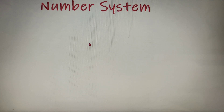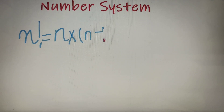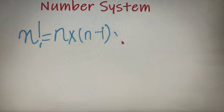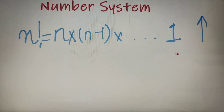Before moving ahead, let's do a quick recap of what a factorial is. Factorial of a number is nothing but all the numbers from n down to 1. So n factorial equals n times (n minus 1) times all numbers down to 1. If you have any doubt on factorials, I have made a separate video explaining all the topics in detail, so go watch that first and then come back to this video.